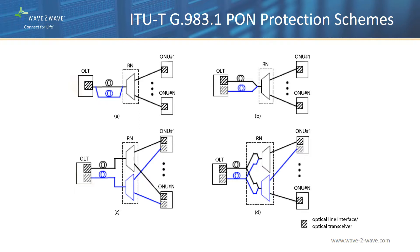These levels of protection are typically reserved and engineered for special services, such as high-tariff business services over a dedicated fiber plant.